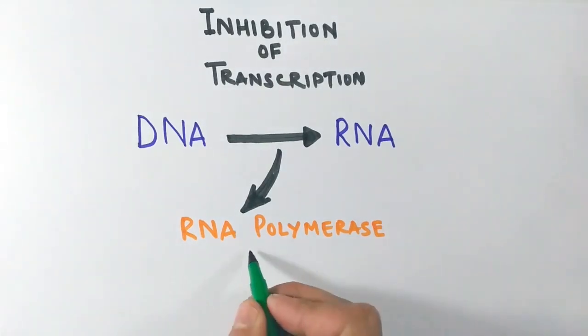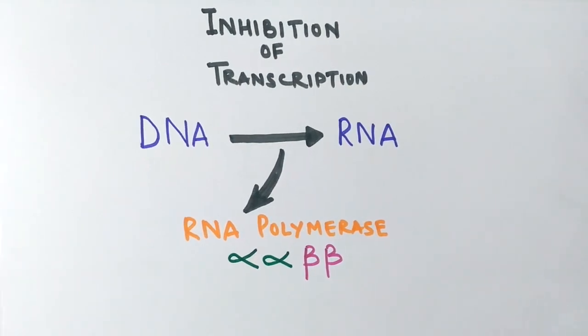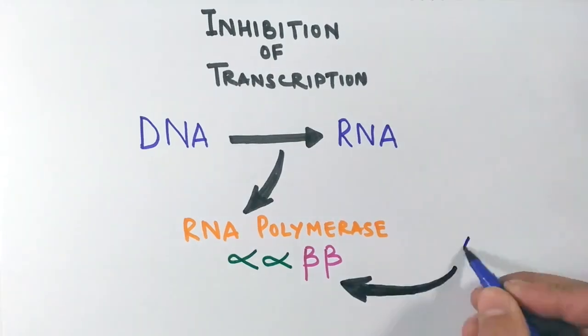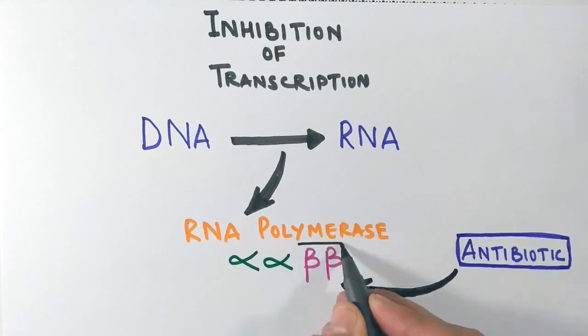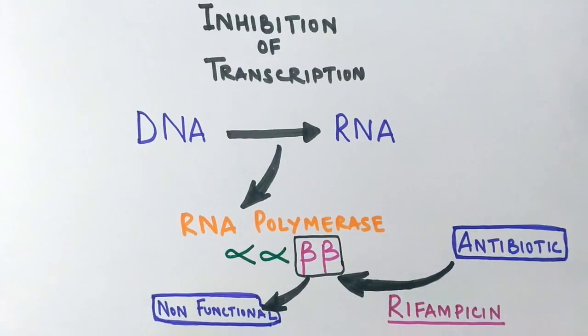RNA polymerase consists of four subunits: two alpha units and two beta units. There is another subunit called sigma factor that makes the holoenzyme. This sigma factor is only for transcription initiation purposes; after initiation, it dissociates. Antibiotics inactivate the beta subunits and render the enzyme non-functional, halting transcription. Rifampicin is one antibiotic that targets mycobacterium and staphylococcus aureus.